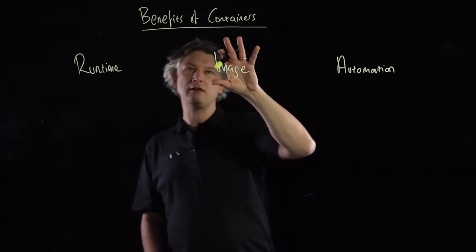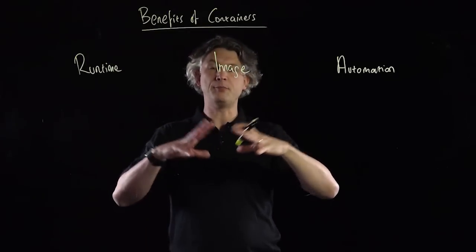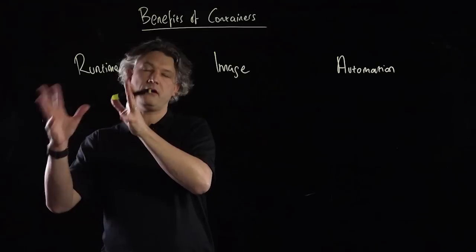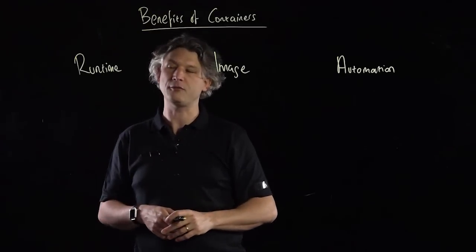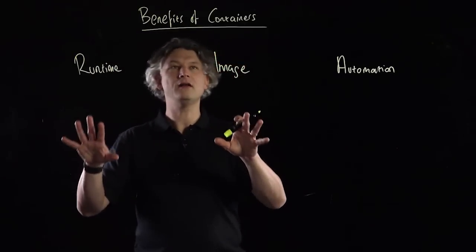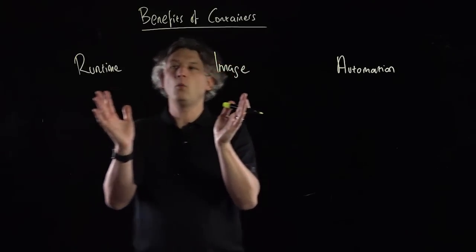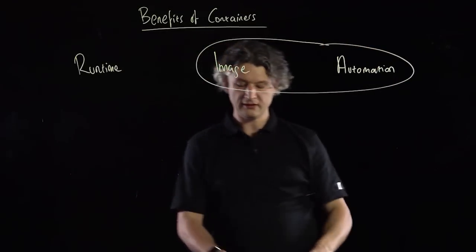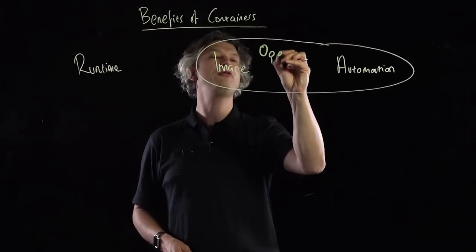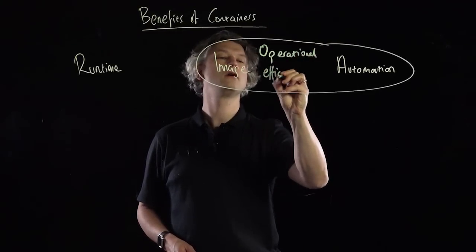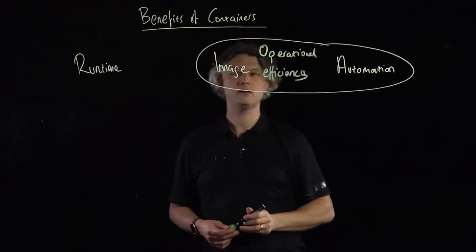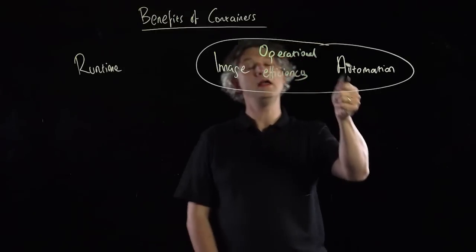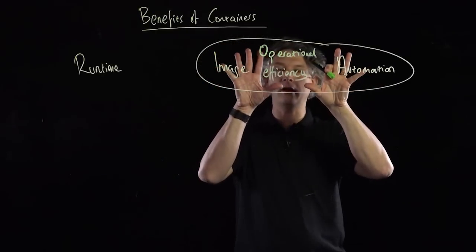Images — remember, an image is the binary state of a potential container. It's all of the binary dependencies that a container needs when it's actually instantiated inside of an operating system at runtime. Because the word container means a bunch of different things, I want to split up the benefits into two key areas. Key area number one I would call operational efficiency.